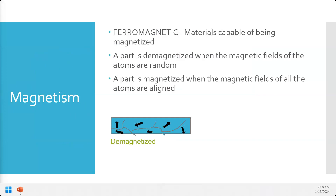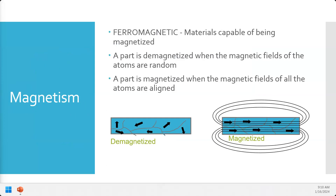When we magnetize the part, we take all those individual little magnetic fields for all the different grains and atoms and align them. When they are aligned, that magnetic field — in this case showing left to right — gets stronger; they build on one another. When they're all aligned and become cohesive, you end up with a part that has an overall magnetic field. This is what we're going to do to our part.